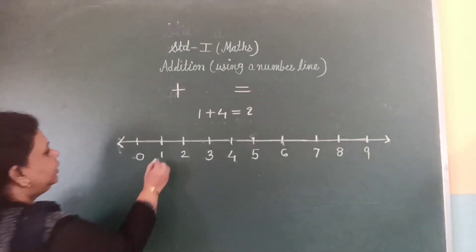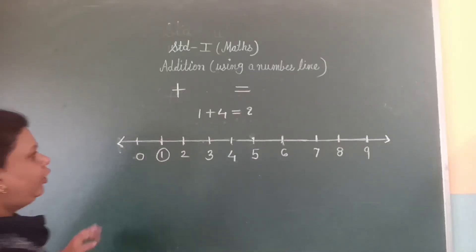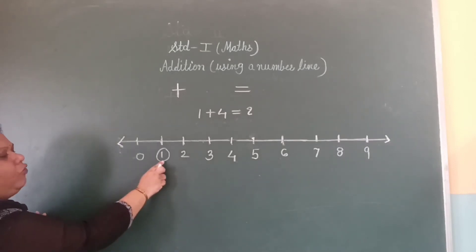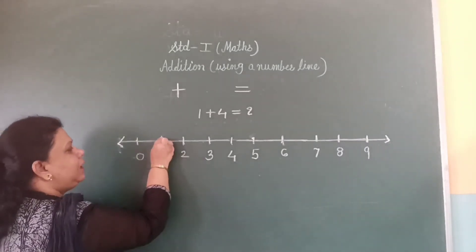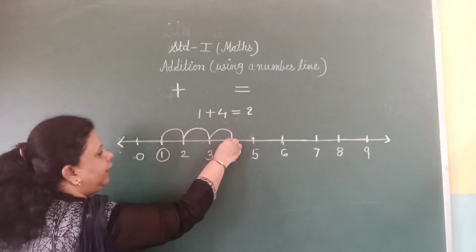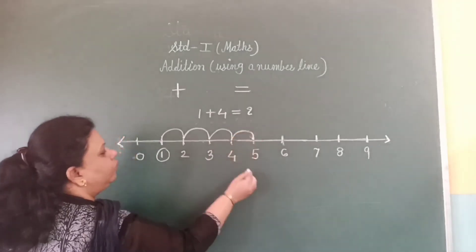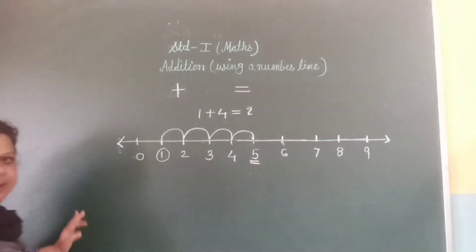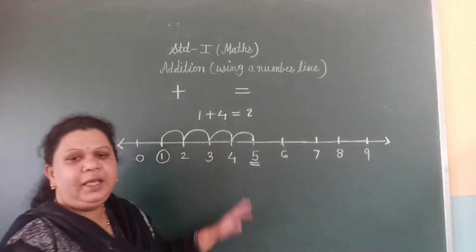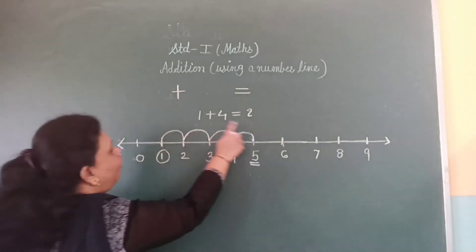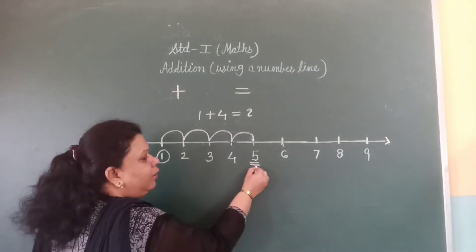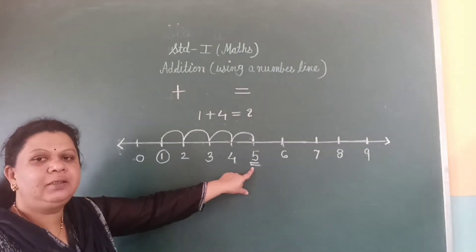Now, 1 plus 4 is equal to how many? This is number 1. To add 4, take 4 forward jumps from 1. Let us start. 1, 2, 3, 4. 4 forward jumps from 1. The number we land on is the answer. Here, after taking 4 forward jumps from 1, we land on number 5. So the answer is 5.